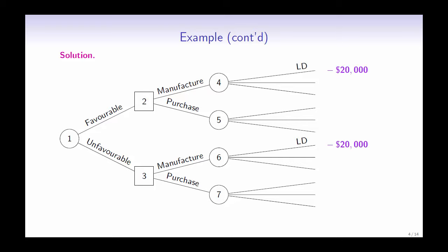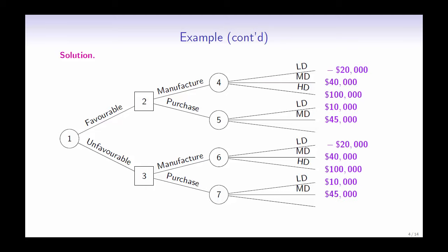If it is in low demand, the company is projected to lose $20,000. If it is in medium demand, the company is projected to profit $40,000. And when it is in high demand, the company is projected to profit $100,000. If the company decides to purchase the component, then we can see the projected payoff when it is in low demand, medium demand, and high demand.